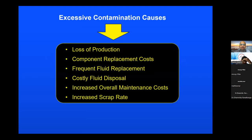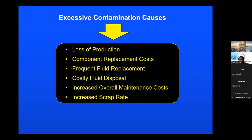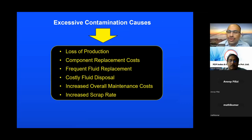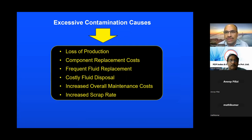What happens when there is excessive contamination in the hydraulic fluid? There is a loss of production, and you have to replace components like pumps and valves. A hydraulic filter costs anywhere between 1,000 to 40,000 or 50,000 rupees - pressure line filters are expensive - but mostly return line filters cost from 1,000 to 15,000 rupees, and it is a one-time buy. The only thing you're changing is the filter element, which costs between 500 to 6,000 rupees, at best 10,000 rupees.